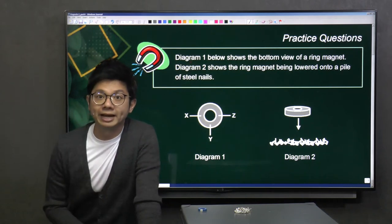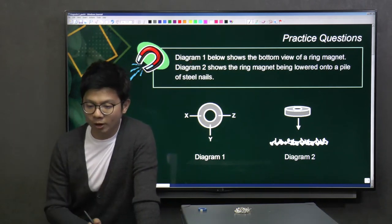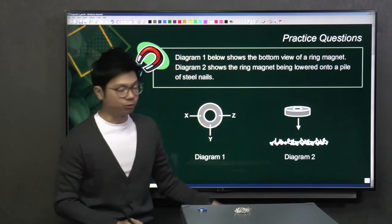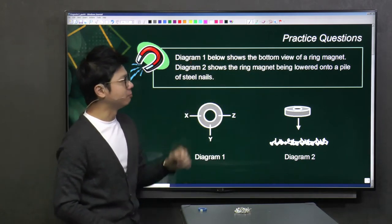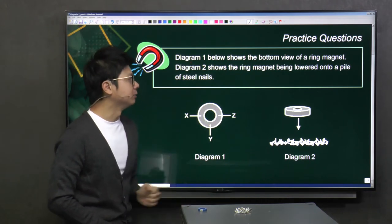Alright, now let's look at some open-ended questions. I have Diagram 1 showing the bottom view of a ring magnet, and Diagram 2 shows the ring magnet being lowered onto a pile of steel nails.